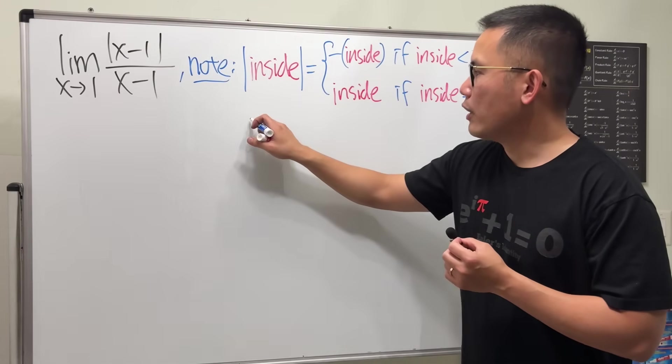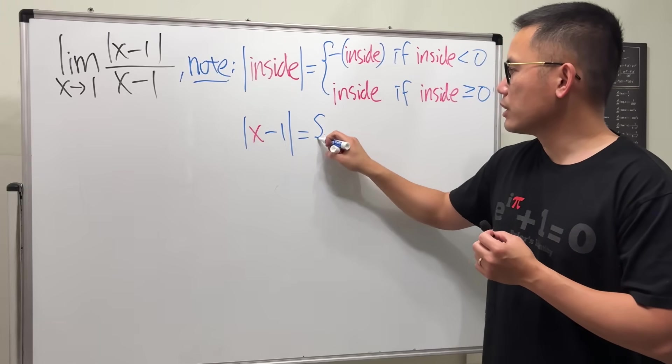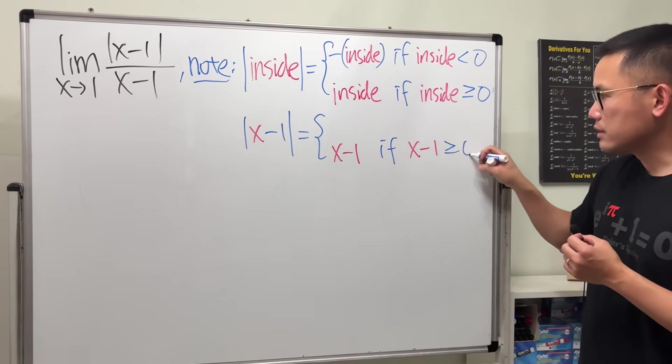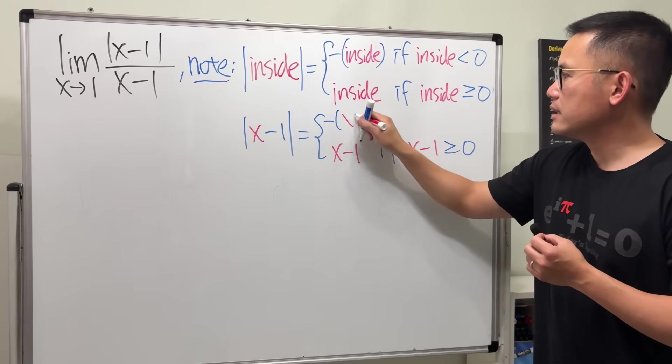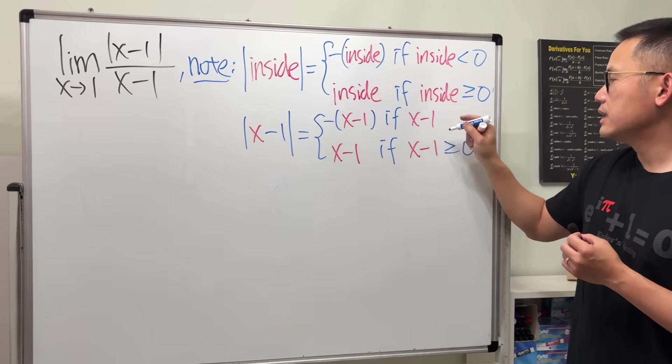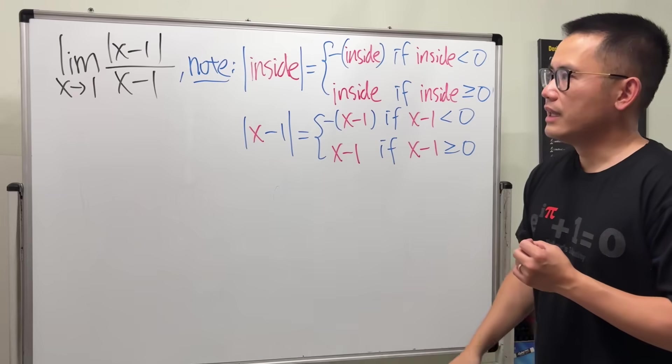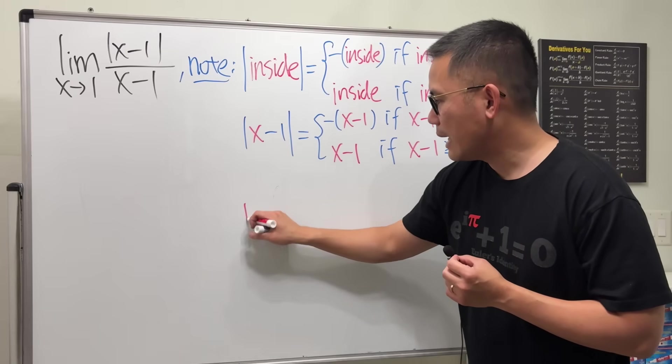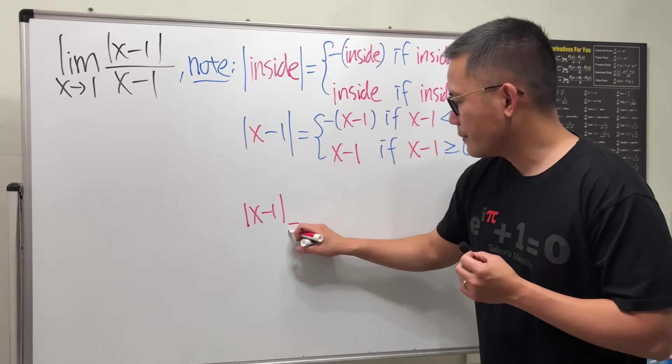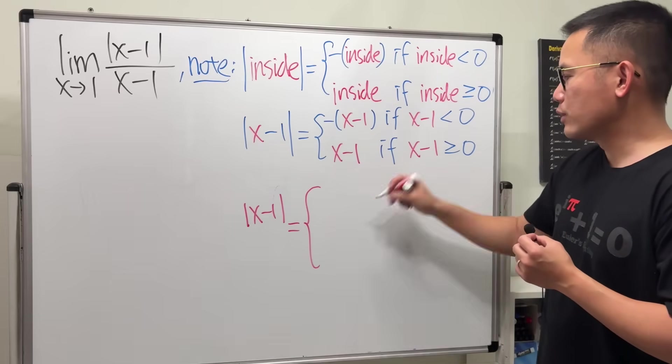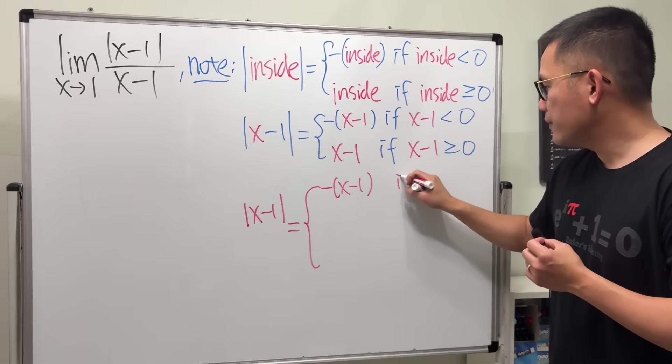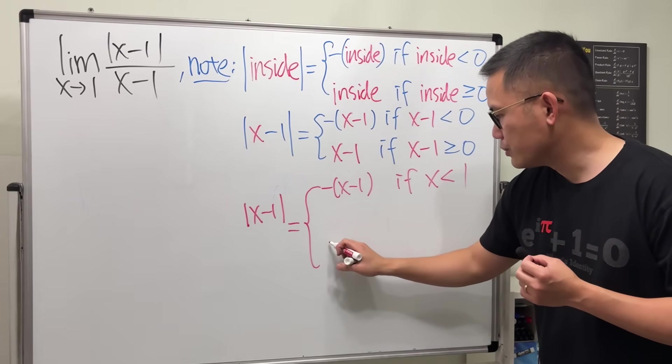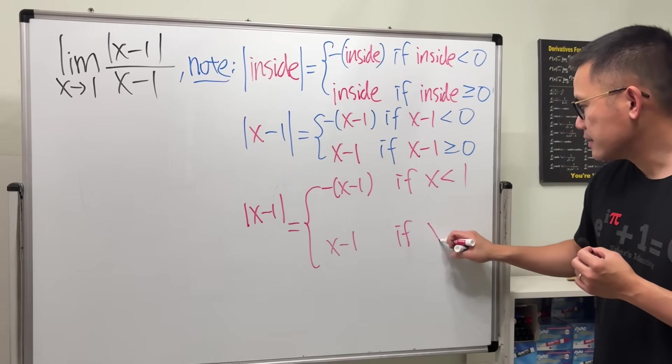Now, for the absolute value of x minus 1, this is just going to give us either x minus 1 as how it is, but that's only when the inside is greater than or equal to zero. But we will have to negate that if the inside is less than zero. Now, one more thing, because here we will have to divide it by x minus 1. So the last piece I want to show you is this. Absolute value of x minus 1. If I just have this piece, that's exactly what we have. So that's negative x minus 1 if x is less than 1, and then right here we have this, which is x minus 1 if x is greater than or equal to 1.